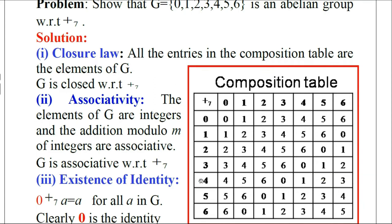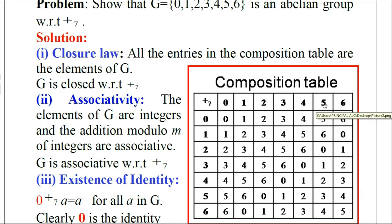Now consider the fifth row headed by the number 4. 4+0=4, 4+1=5, 4+2=6. For 4+3=7: when 7 is divided by 7, the remainder is 0. 4+4=8: when 8 is divided by 7, the remainder is 1. 4+5=9: when 9 is divided by 7, the remainder is 2. 4+6=10: when 10 is divided by 7, the remainder is 3.